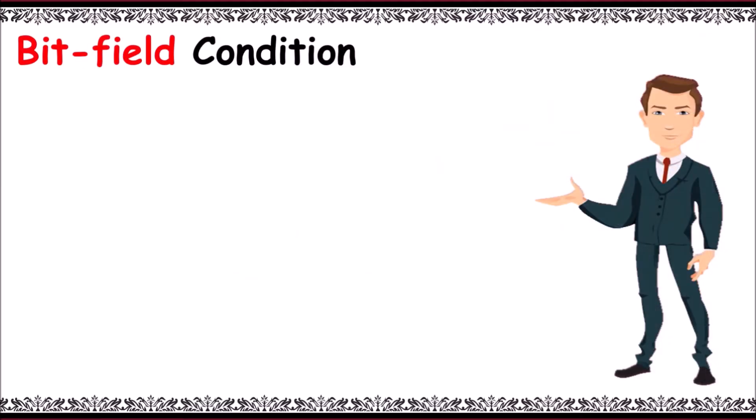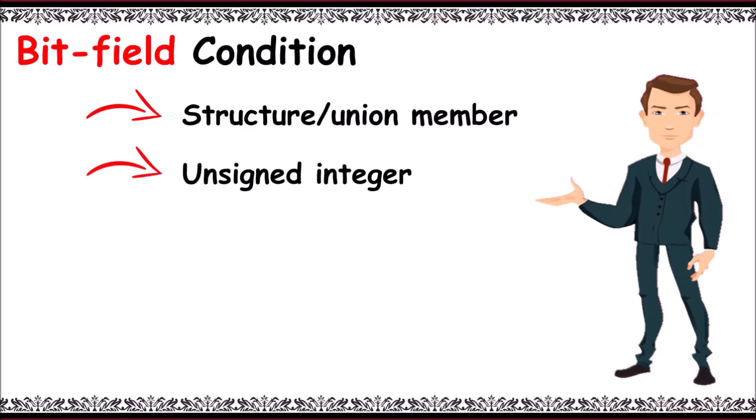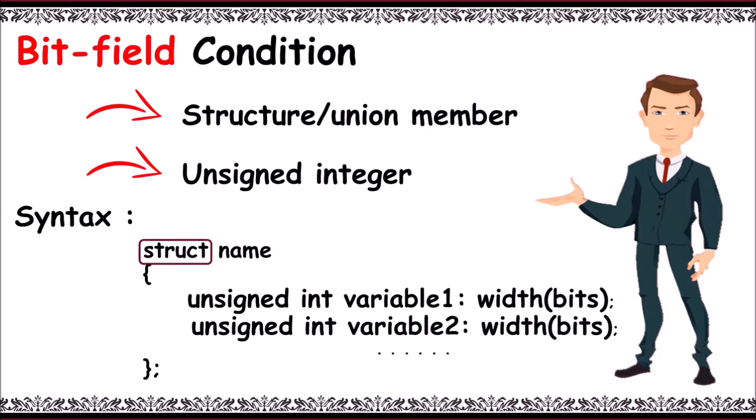To achieve bitfields we need to follow two conditions. First, it must be either a structure or union member. Second, it must be an unsigned integer. The syntax is: struct or union keyword, then its name, then unsigned int variable, then colon symbol followed with width, that is number of bits, next variable if required, and so on.